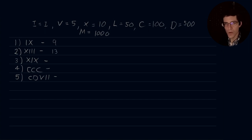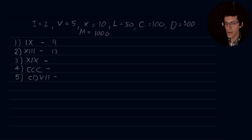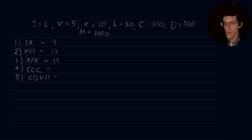Number three, XIX: we have a value of 10, then an I, then another 10. We first subtract the I from the X, giving us 9, and we add 9 to our 10, giving us 19. Or equivalently, the sum of the two X values is 20, take one away, and you get 19. Number four, CCC: it's a repeating value of 100, so we end up with 300.